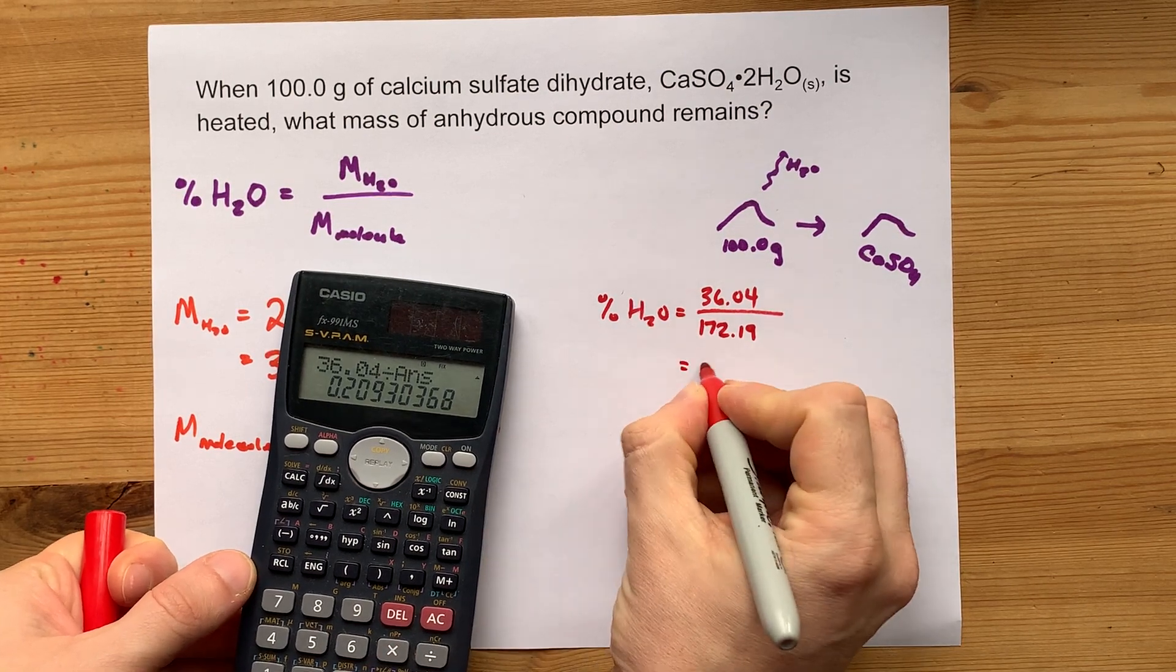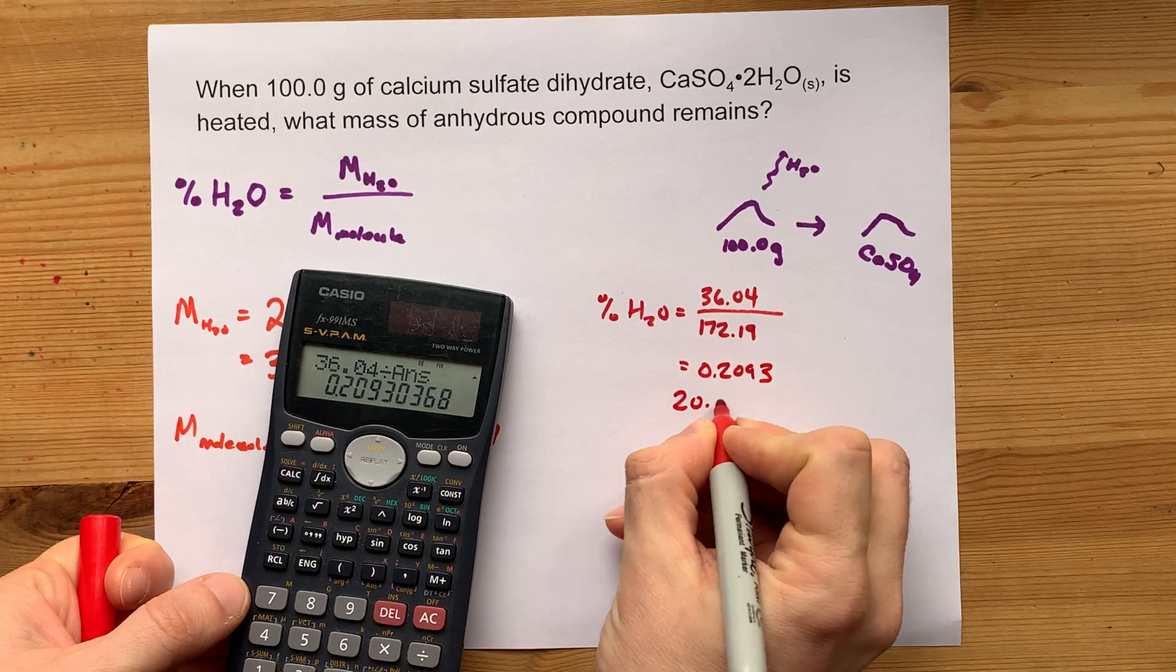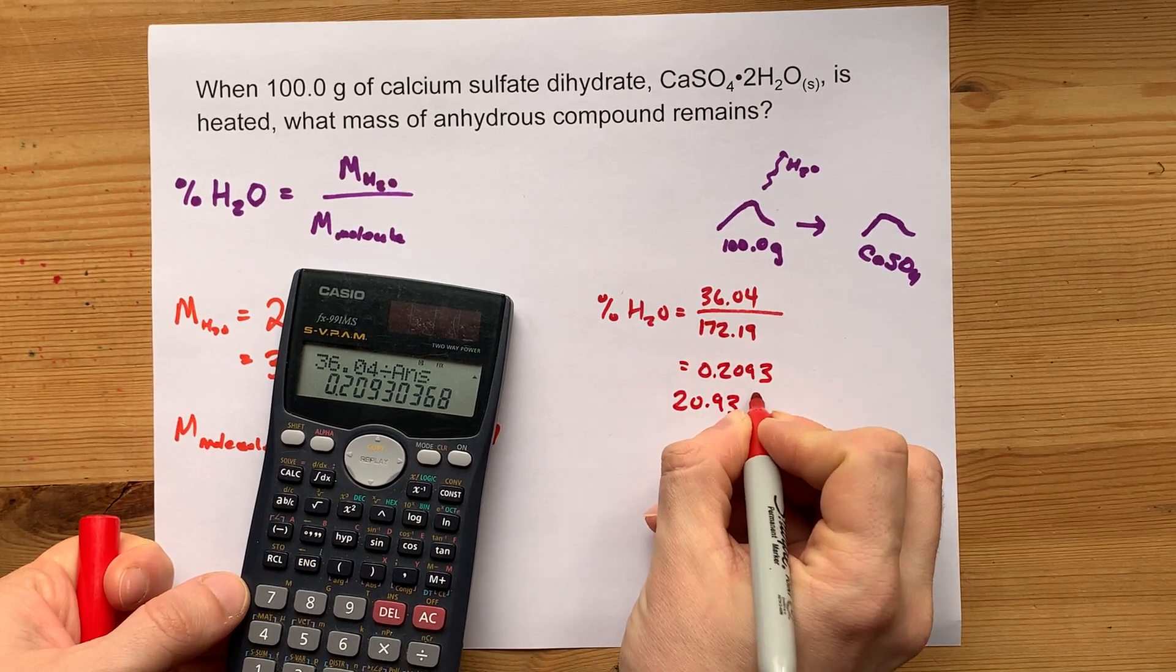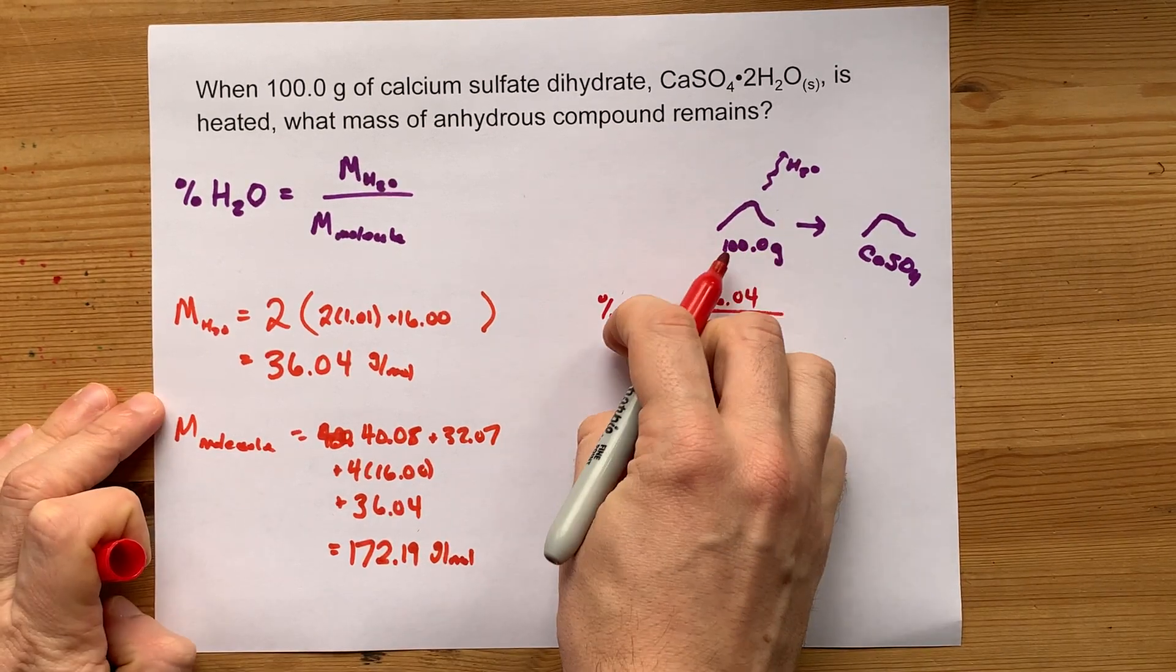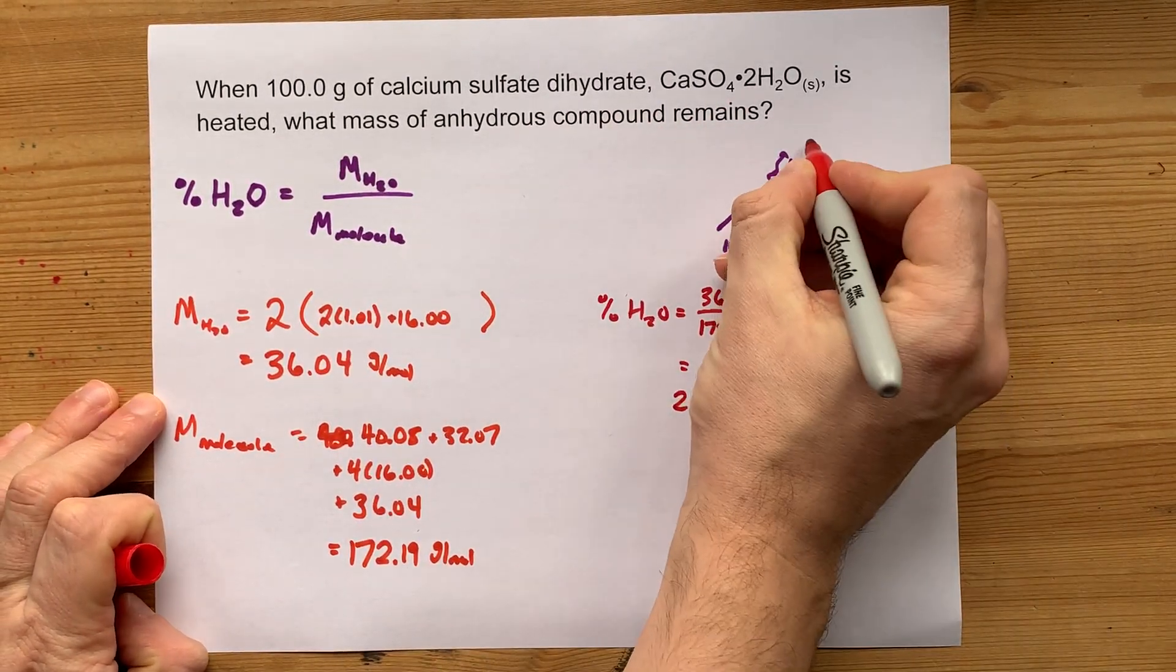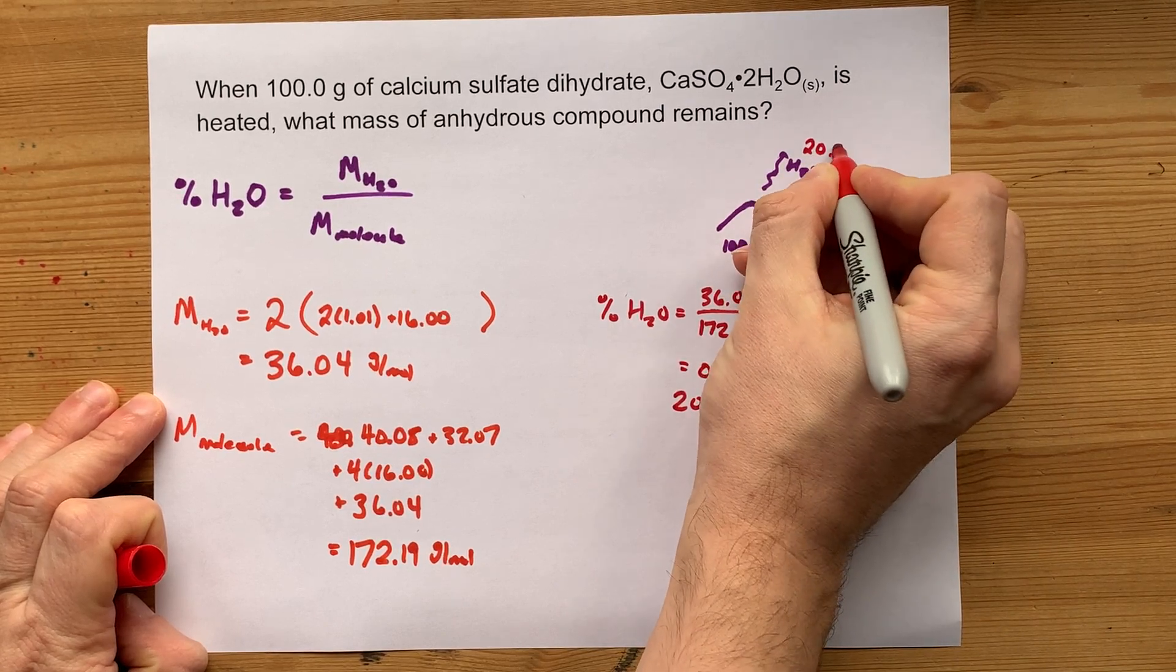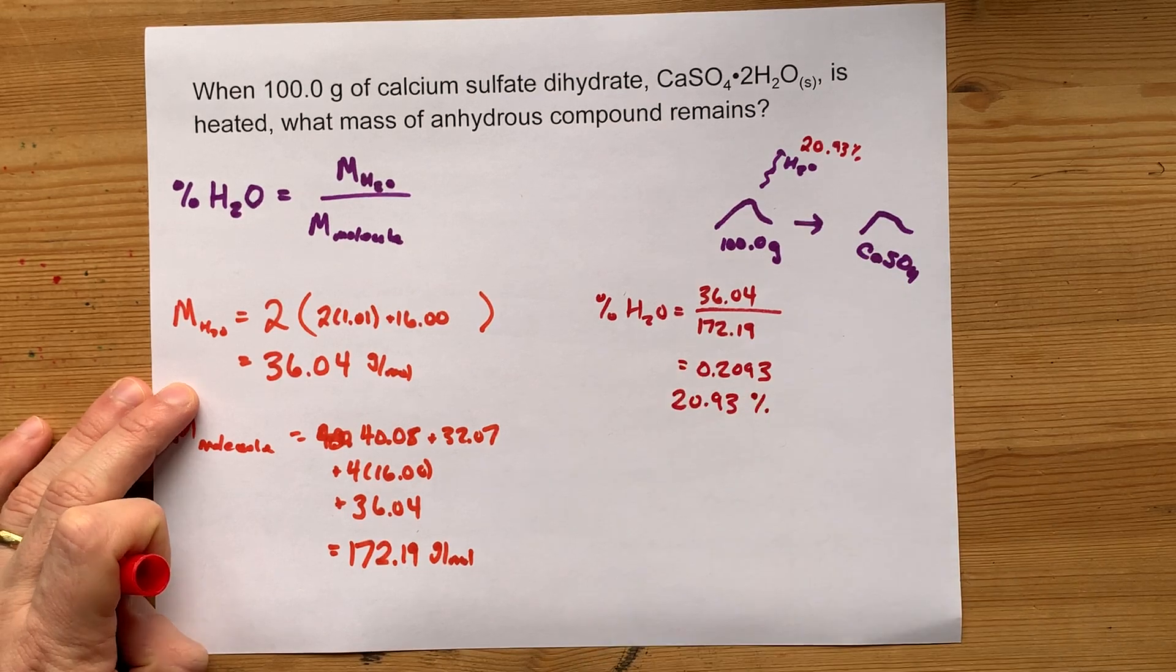I get 0.2093 or 20.93%. What that means is that when we heat this 100 grams of dihydrate, we're going to lose 20.93% of the mass to water that evaporated.